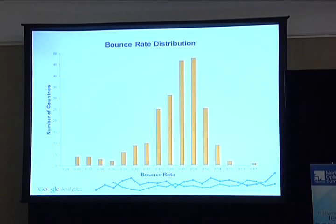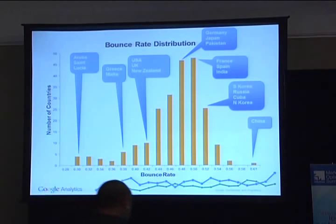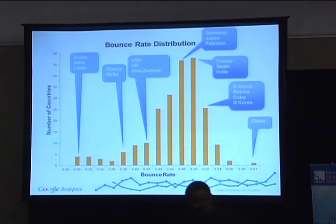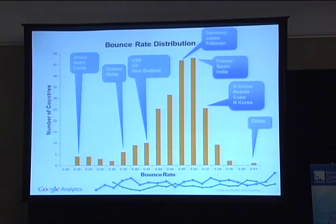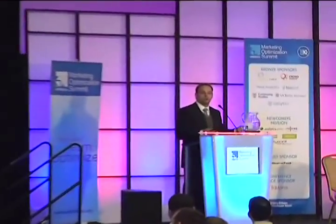Let's put some countries on this to make it interesting. On the far left, you've got Aruba and St. Lucia — clearly island life leads to less bouncing. All the way toward the center, we've got Germany, Pakistan, Japan. On the far right, we have China. It's hard to say what is happening in this case; we're not saying China has bad engagement, we're saying this is the average bounce rate as we see it. The US and UK show a slightly lower than average bounce rate, and our hypothesis is that the web is mostly geared towards folks who speak English.